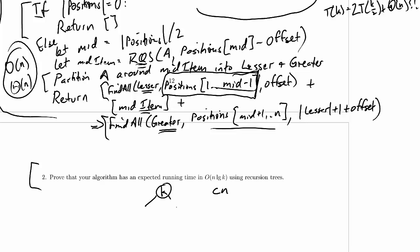Now how many recursive calls do we make? Two. One over here, one over here. And the problem sizes there are k over 2, just as we had wanted.